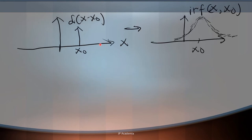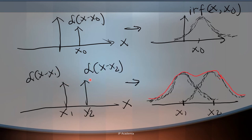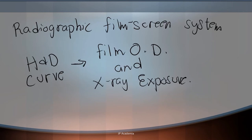An impulse input located at x equal to x0 produces the impulse response function located at x0. If we have a linear system, the output of two impulse inputs located at x1 and x2 is a superposition of your impulse responses located at x1 and x2. There are many systems that are not linear but can be linearized. For medical imaging, we have a radiographic film-screen system using the Hurter and Driffield curve, which shows the relationship between film optical density and x-ray exposure, and this can be used to linearize our radiographic system.